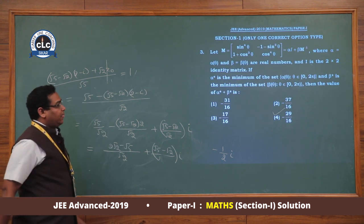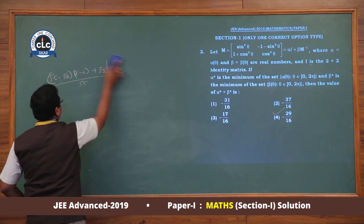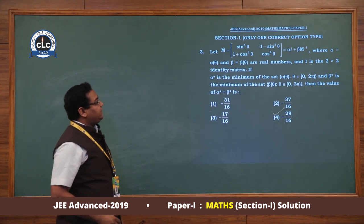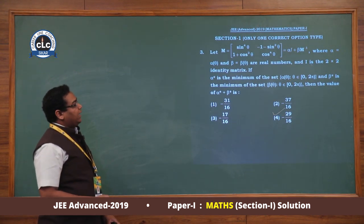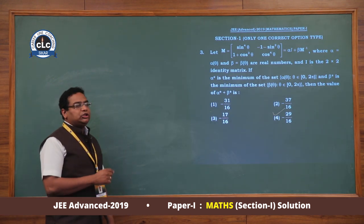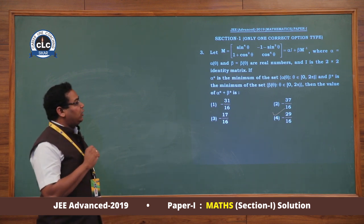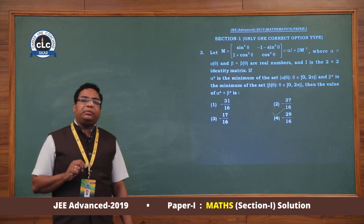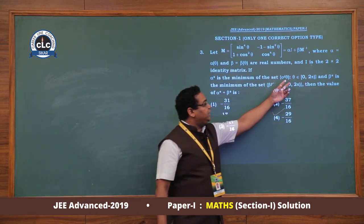Next, question number 3 is related to matrix and determinant. We are given a 2×2 matrix M, and M = α·I + β·M⁻¹ is given. From here we need to find the values of α and β in terms of θ. Then θ is varied from 0 to 2π, from which we find the minimum values of α and β, called α* and β*.